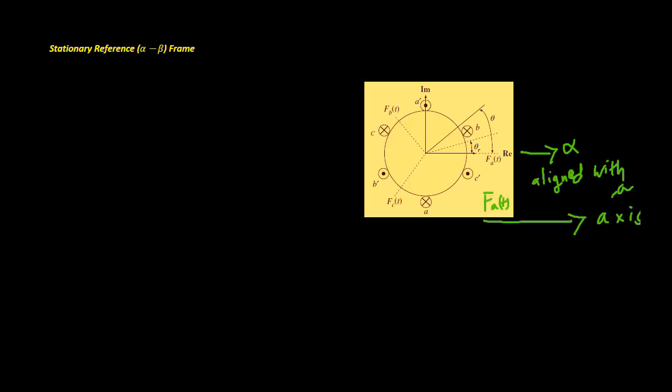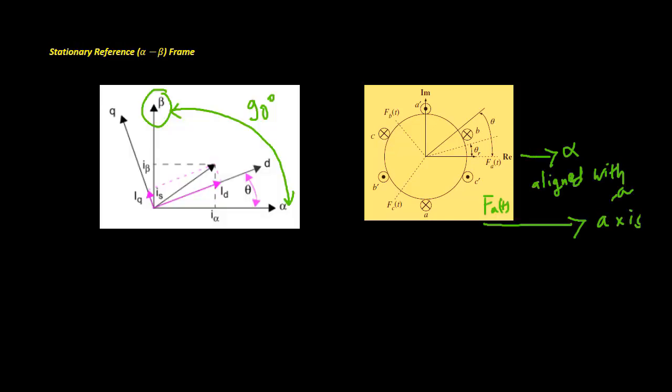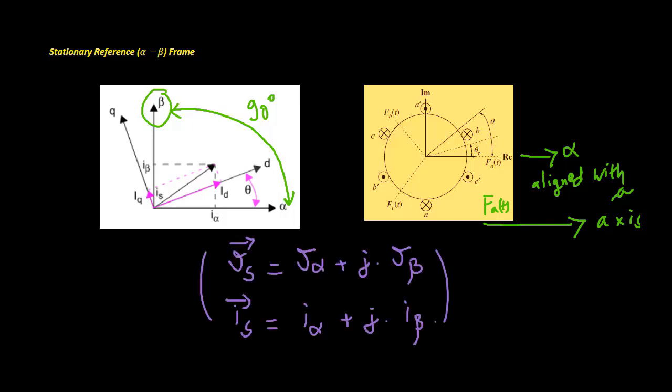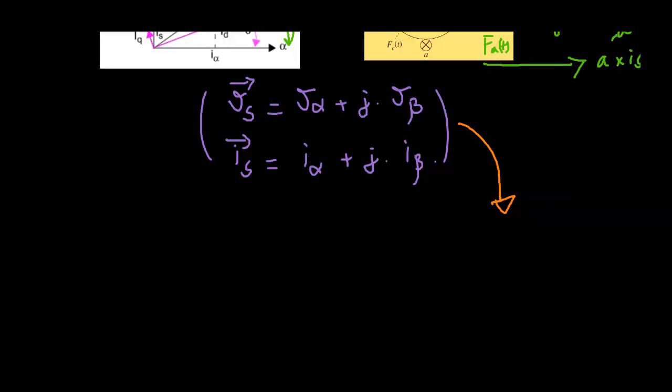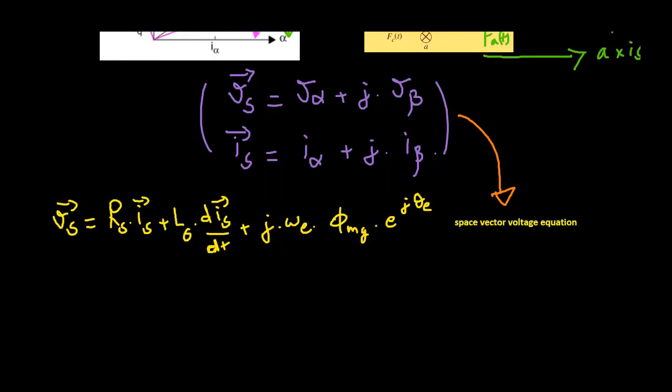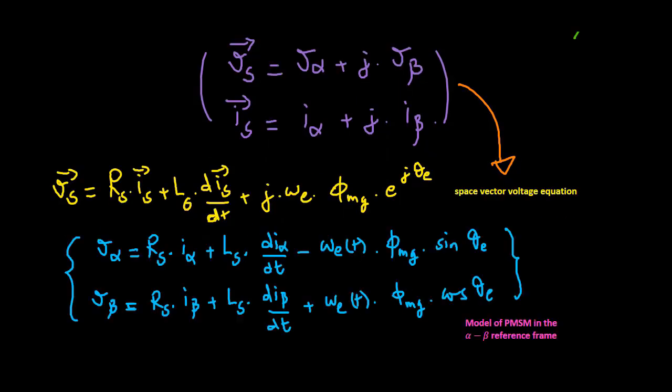One choice of the reference frame is a stationary reference frame with the real alpha axis aligned with the peak MMF of phase A, and the imaginary beta axis in quadrature. By projecting the space vectors of voltage and current onto the real alpha and imaginary beta axes, these vectors can be represented by complex notation. Substituting the complex representations into the space vector voltage equation, and equating the real and imaginary parts on both sides, gives the model of PMSM in the alpha-beta reference frame.